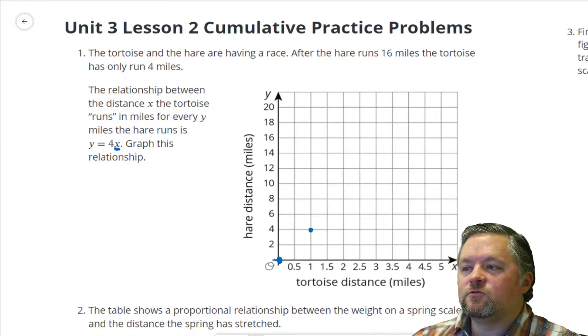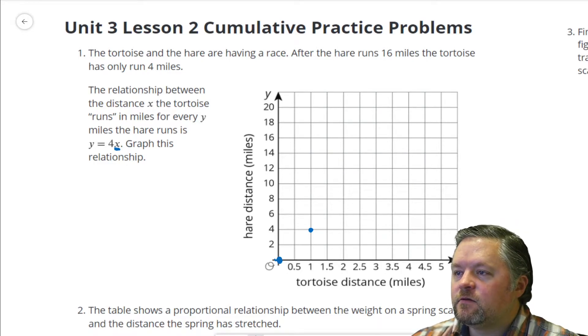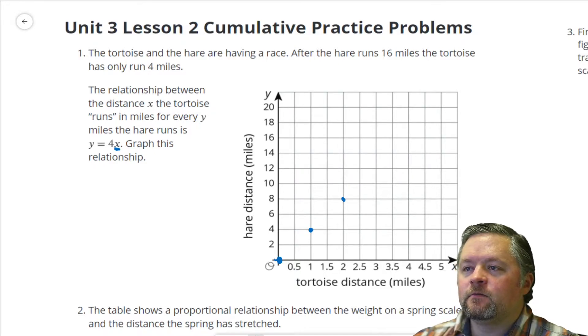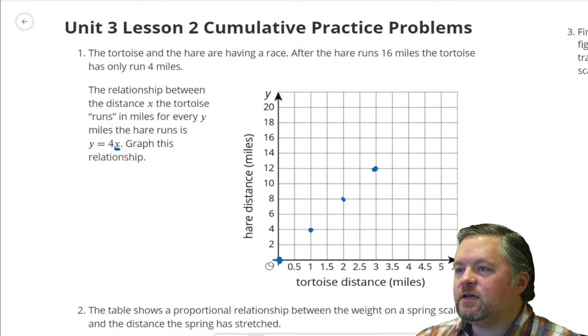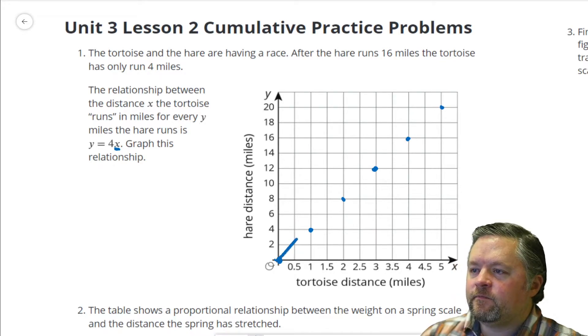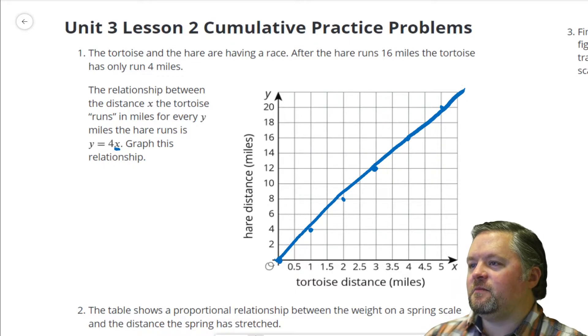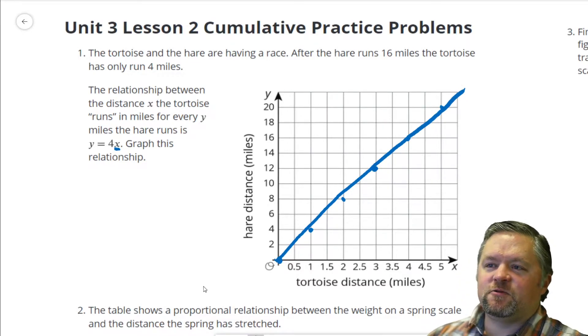If the tortoise goes 2 miles, substitute in a 2, 4 times 2 is 8. If the hare runs 3 miles, 4 times 3 is 12. The tortoise runs 4, 4 times 4 is 16. 5 times 4 is 20. That's not the best straight line I've ever drawn. Let's just pretend I'm good at that.